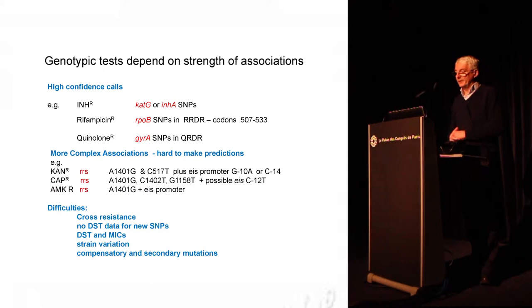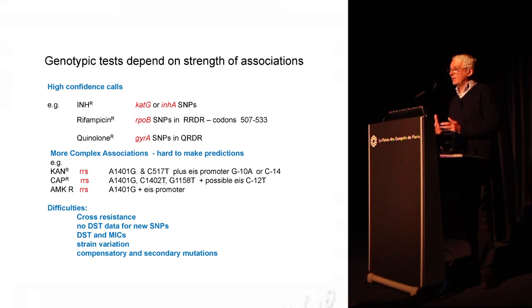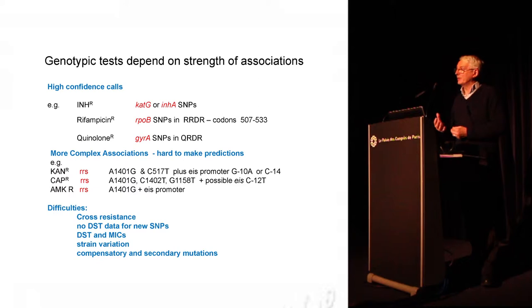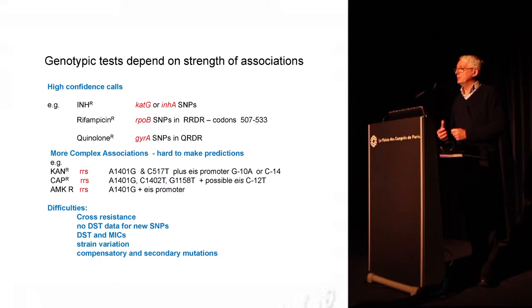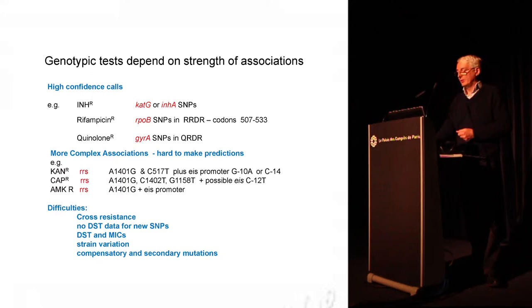Difficulties associated with this include whether a SNP gives cross-resistance against different antibiotics in the same category, that we don't have susceptibility test data for any new SNP found through whole genome sequencing, and that susceptibility testing for second-line drugs is fraught with difficulties and often doesn't give quantitative MIC data — making it difficult for clinicians to use. Different strains are also quite variable in the SNPs they contain, and you can get secondary and compensatory mutations. Whole genome sequencing is a good way to capture all the genetic information, but it needs to be fed into very robust drug susceptibility testing.